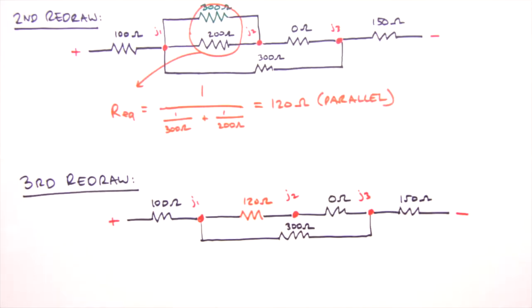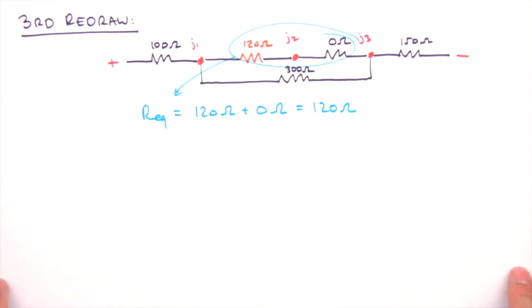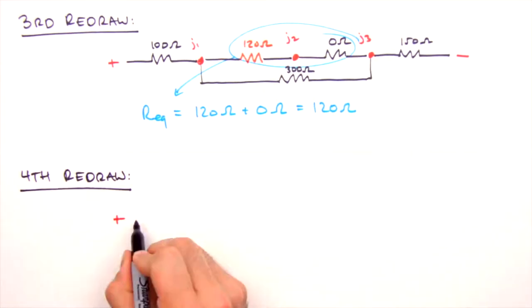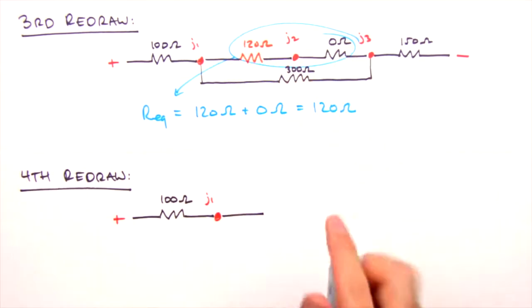So which resistors are next? You guessed it, the two that are in series. So we just add their resistances together. Not a very exciting equivalent resistance, I admit, but note that junction two will not be present in our fourth redraw. So we wash, rinse, repeat, replacing these two resistors with their resistive equivalent.